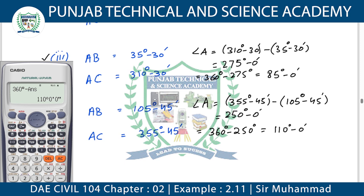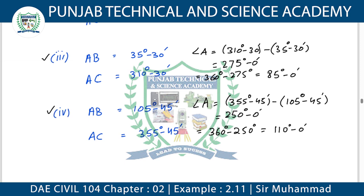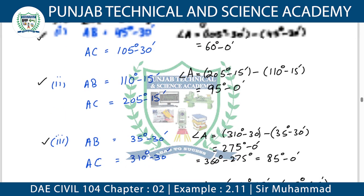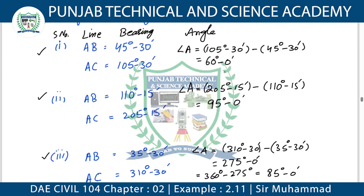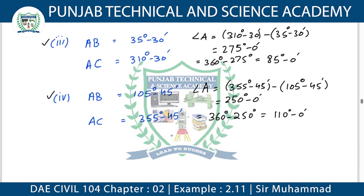In this way our question is complete. Please listen to this part carefully — what you saw here has 4 types of questions. These 4 types are all one method. If you can do one of them, you can do the rest as well. The concept here is: two lines' bearings are given and you have to find their interior angle.